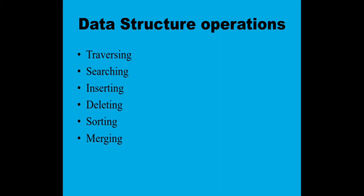The first operation is traversing. What do you mean by traversing? Traversing means accessing each record only once so that it can be processed. Suppose you are storing data in a particular format and you need one element. Each record is also known as an element. So accessing each element only once so that you can process that particular element is known as traversing.